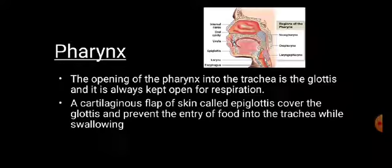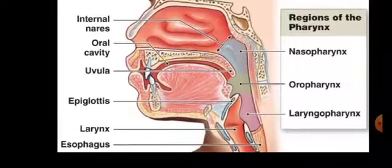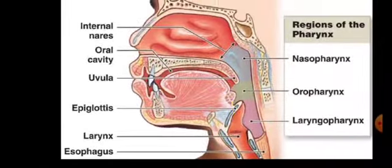The opening of the pharynx into the trachea is called the glottis. This is the glottis region. This is the nasal cavity and this is the buccal cavity, and both of these open into the pharynx. From here, the pharynx opens into the esophagus as well as the trachea, and the opening of the pharynx into the trachea is called the glottis.